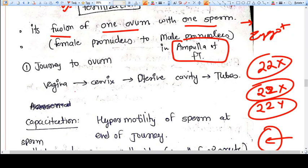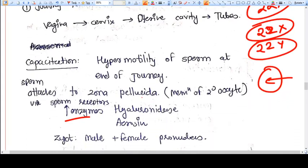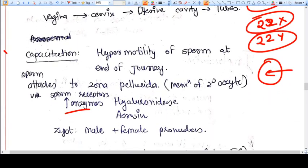The sperm has to travel from vagina to cervix to uterine cavity to the tubes, and then they can reach the ovum. One term, capacitation, is very important.